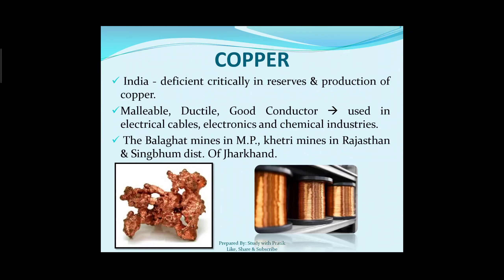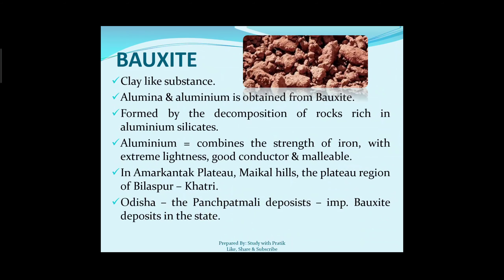Bauxite is a clay-like substance from which alumina and aluminium are obtained. It is formed by the decomposition of rocks rich in aluminium silicates. Aluminium combines the strength of iron with extreme lightness, and is a good conductor and malleable. Bauxite is found in the Amarkantak plateau, Maikal hills, and the plateau regions of Bilaspur and Katni. In Odisha, the Panchpatmali deposits are important bauxite deposits in the state.